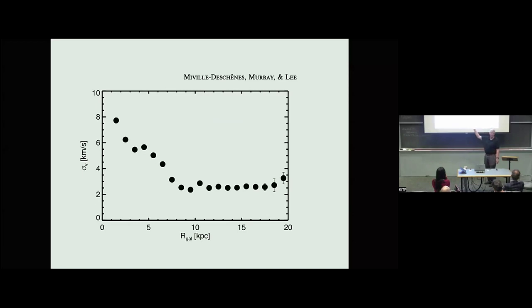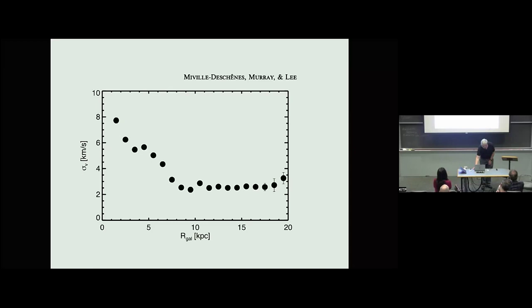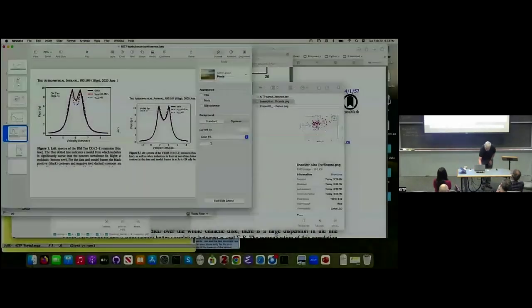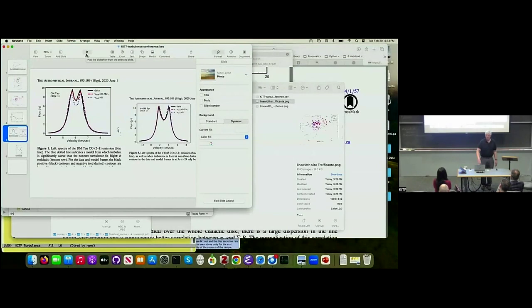The simple interpretation is that out at large radii there's not much star formation, and as you go in you get a lot more — that's star formation feedback driving some of the turbulence. This is an accretion disk so there's energy available; you could drive it from the accretion disk. On the inside there is a bar which also stirs up the gas. Whether you want to call those motions turbulence is another question, but there are indications that different things produce different types of turbulence.